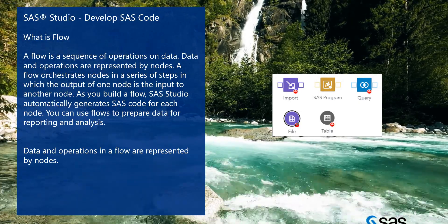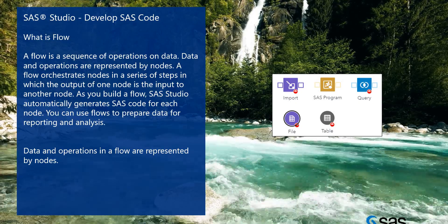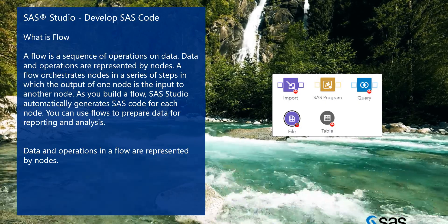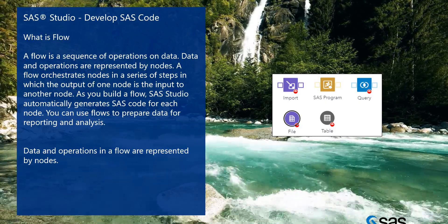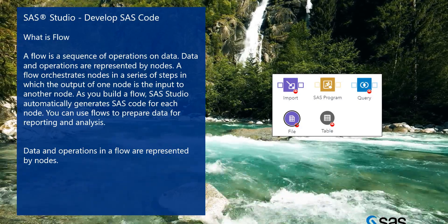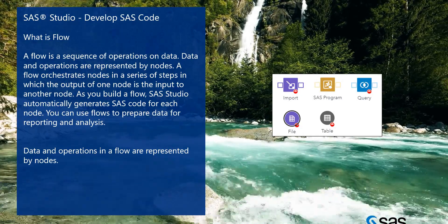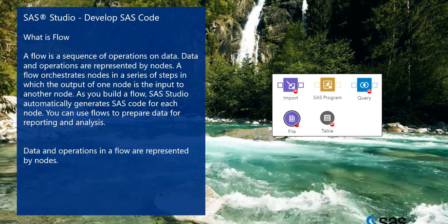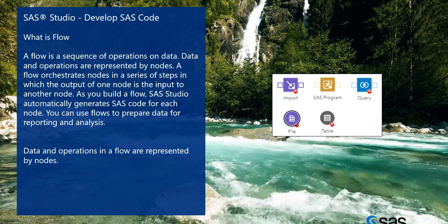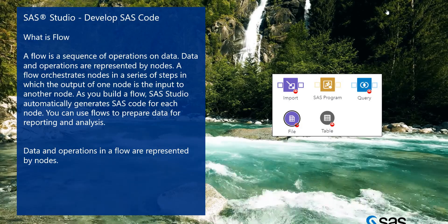A flow is a sequence of operations on data. Data and operations are represented by nodes. A flow connects nodes in a series of steps in which the output of one node is the input to the next node. As you build a flow, SAS Studio automatically generates SAS code for each node. You can use flows to prepare data for reporting and analysis.